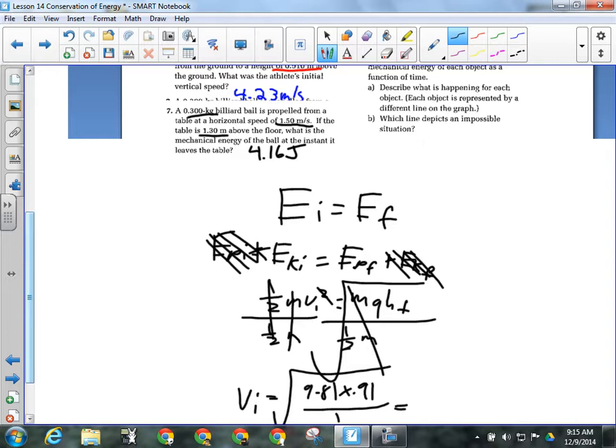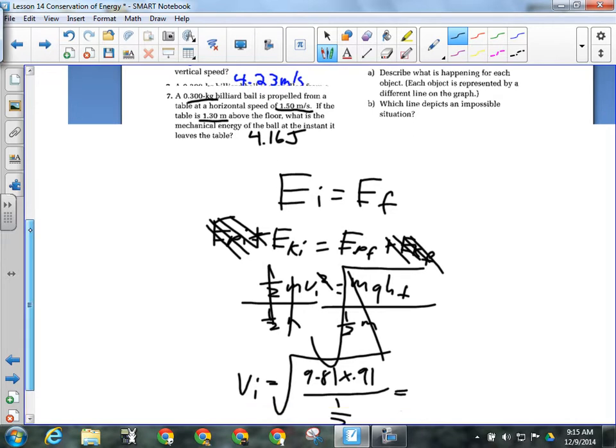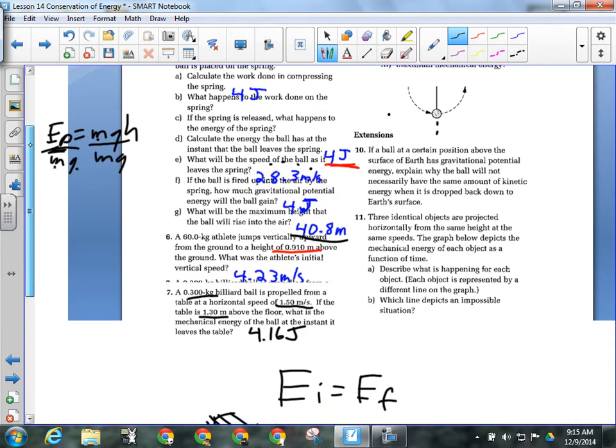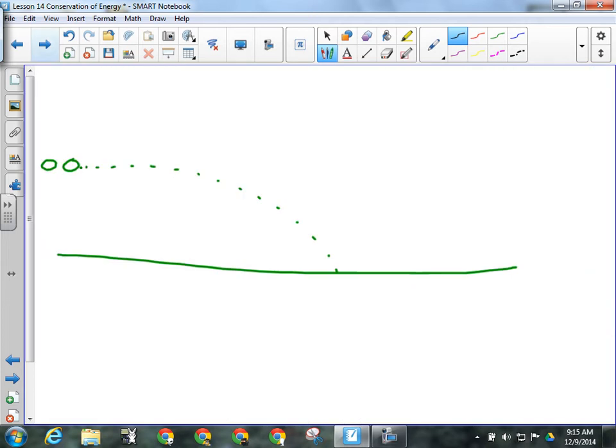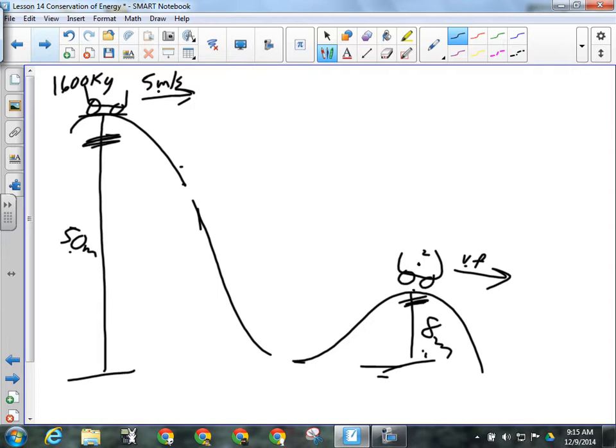So, that solves for VI. VI will be the square root of 9.81 times 0.91 over one-half. And when we do that, we should get 4.23 meters per second. Everybody all right with that? We talked about quite a few of those on Friday. Let's have you guys try this question. We talked about this. We did one as an example the other day. Roller coaster has a mass of 1,600 kilograms, starts at the top of a 50-meter hill, moving 5 meters per second. I want to know how fast it is moving on the top of the 8-meter high hill at the bottom of the track.